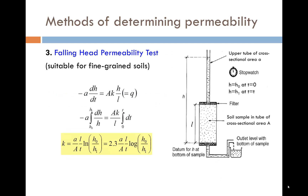The falling head permeability test is used for fine soils. This time, the change in head in the upper tube from H0 to H1 corresponding to a certain time period is noted. Again, Darcy's law is used, but some integration is required in this case to arrive at the solution.